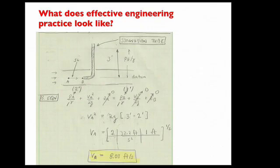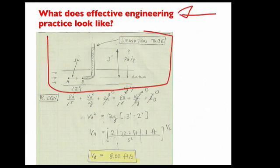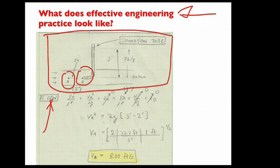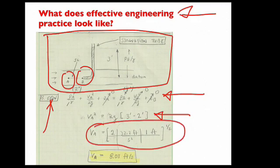Here is what effective engineering practice looks like. We see a system diagram with points labeled. We see the main equation identified and term-by-term analysis performed. The general equation reduces to a simplified equation. We see a unit grid with units carried and canceled, and a correct answer in the context of the homework problem.